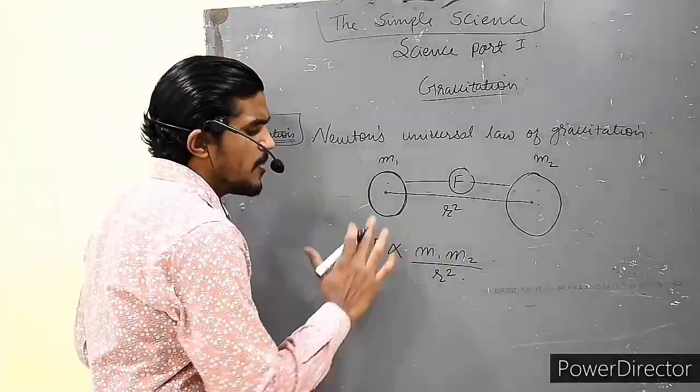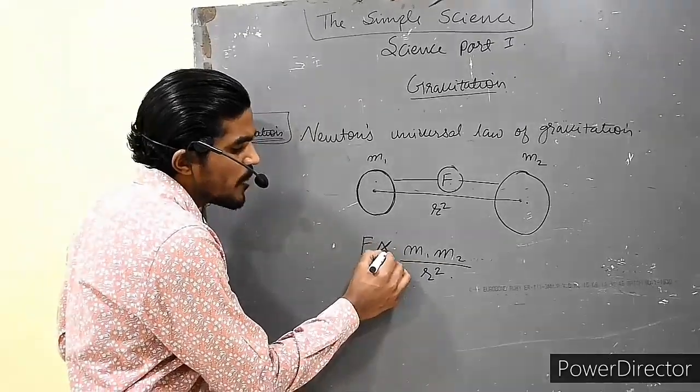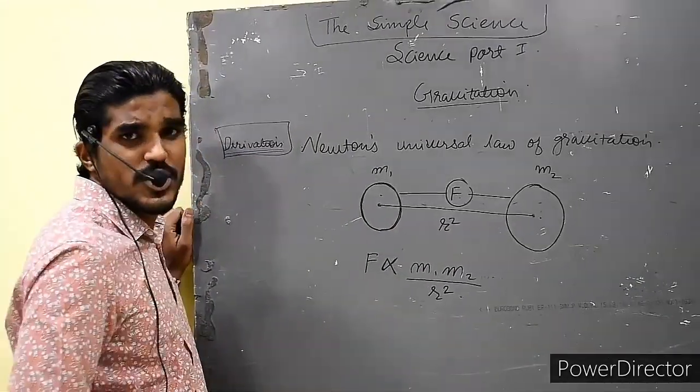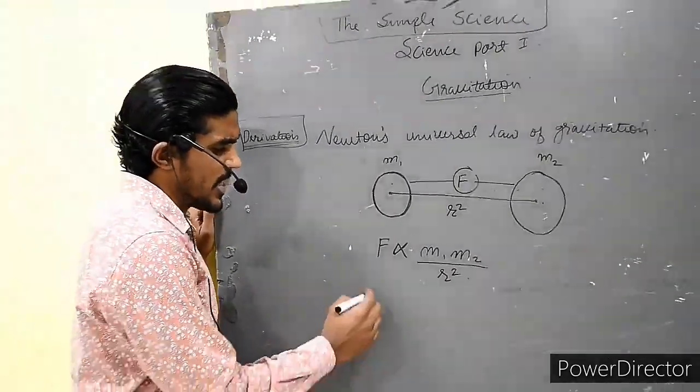Now, we got the mathematical format, but here the problem is the proportionality. We have to remove the proportional sign. Now how to remove the proportional sign?